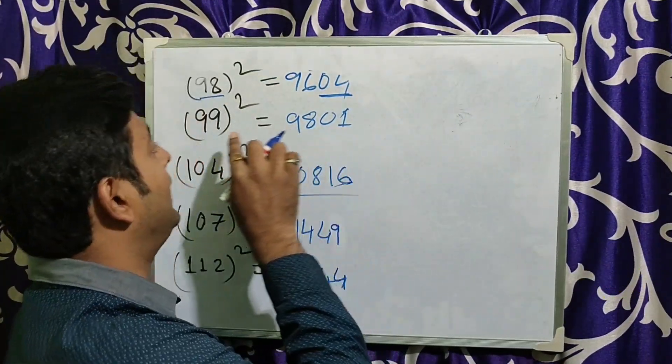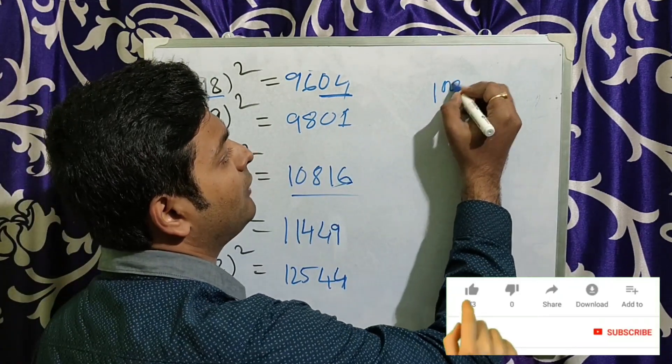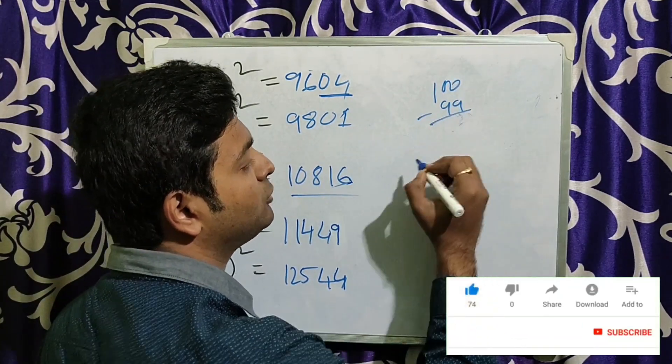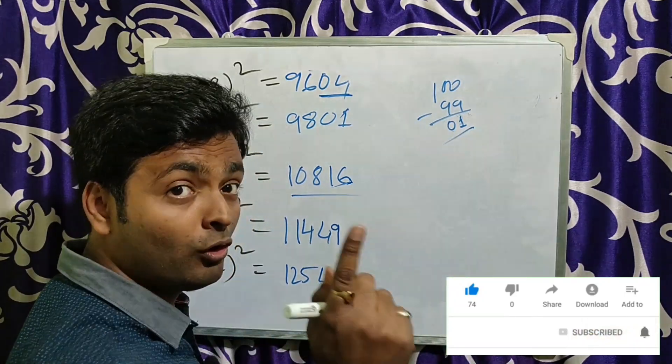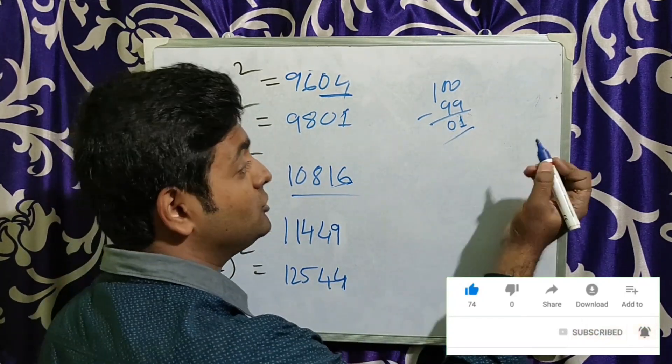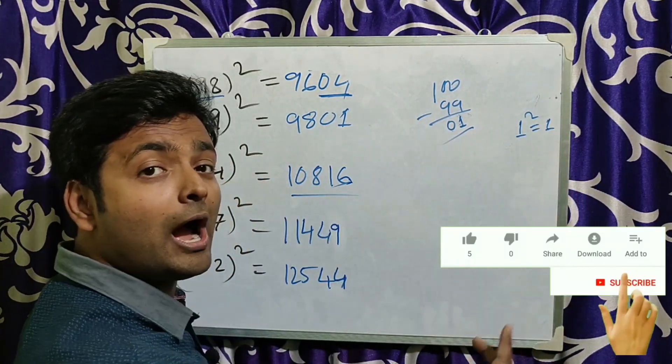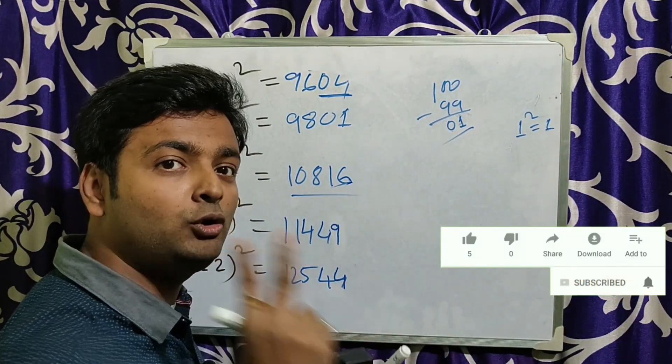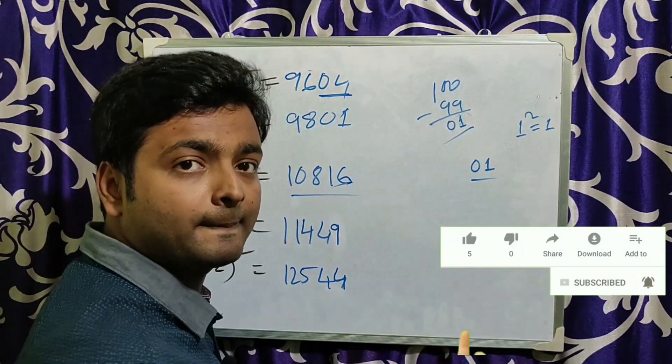Like if I want to do that 99 square. 99 square is less than from 100. If I do the subtraction, that means coming 1. So 1 square is what? 1 only, 1 itself. Again I am telling you that you have to write 2 digit number, that means 0, 1 I have to write.